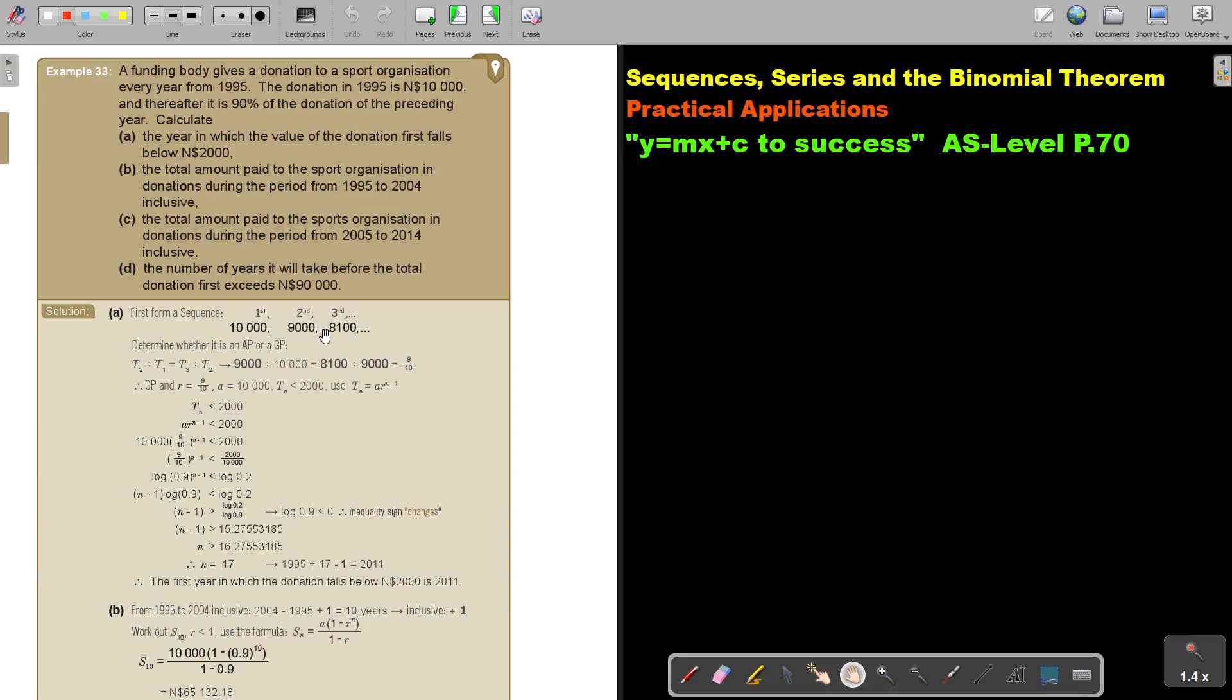So you form a sequence. It's 10,000, then 90% is 9,000, 90% of 9,000 is 8,100. Then determine whether it's an AP or a GP. It's a GP and then the value of R will be 9 over 10.